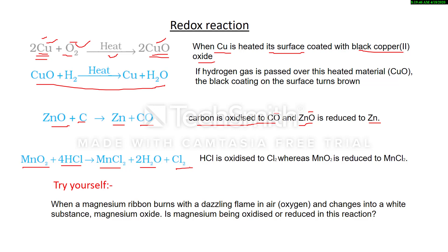In the reaction of MnO2 with HCl: HCl is oxidized to Cl2, because hydrogen is removed from HCl — removal of hydrogen is oxidation. So HCl is oxidized. MnO2 is reduced to MnCl2, because oxygen is removed from MnO2 — removal of oxygen is called reduction. Now try yourself: when magnesium ribbon burns in air and changes into the white substance magnesium oxide.